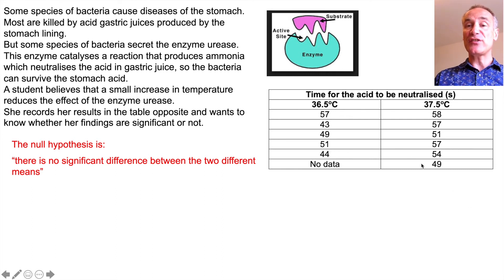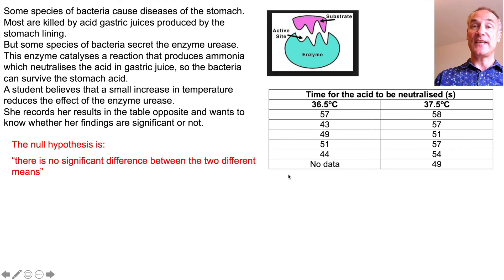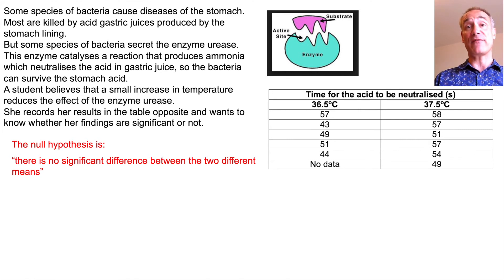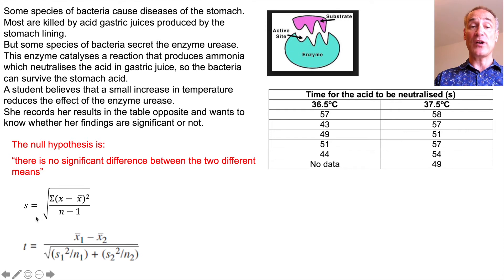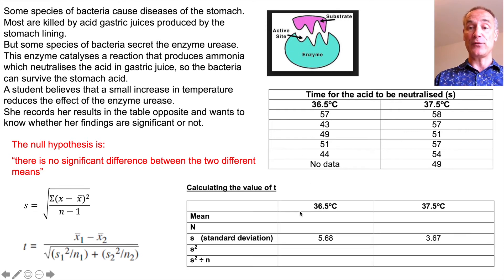She changed the temperature by just one degree. Her null hypothesis is: there is no difference between the two means at the two different temperatures. She'll use the t-test and first work out the standard deviation for each sample. The video shows how to use the table of results to collate this information.